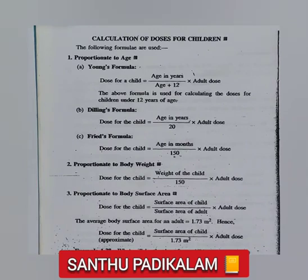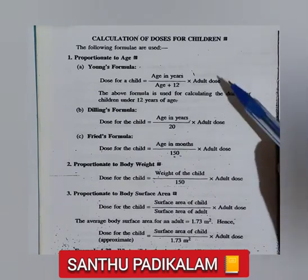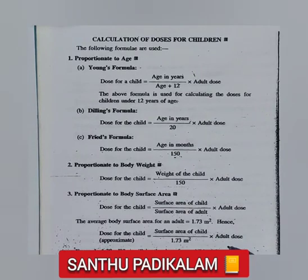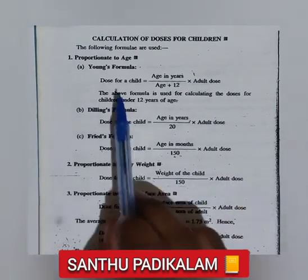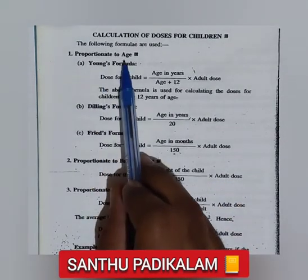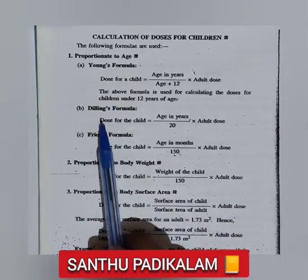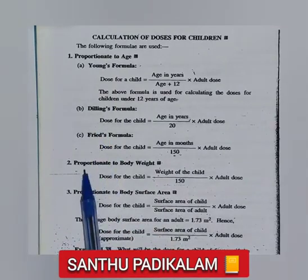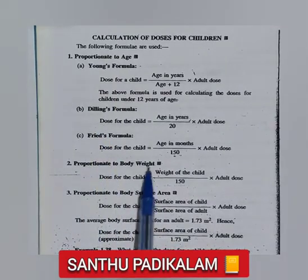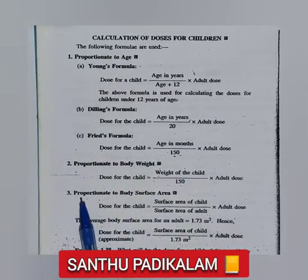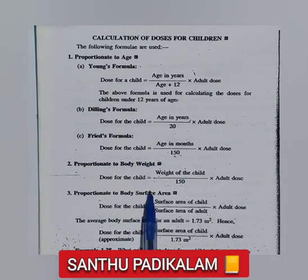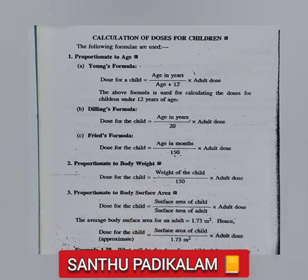In this calculation, we will learn three formulas. The first is proportionate to age, the second is proportionate to body weight, and the third is proportionate to body surface area. We will know all three formulas.